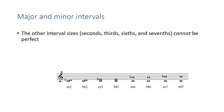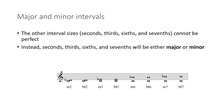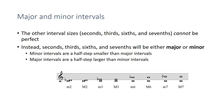The other interval sizes — seconds, thirds, sixths, and sevenths — can never be perfect. They have two states: they can be either major or minor. Minor intervals are a half step smaller than major intervals, and major intervals are a half step larger than minor intervals. So a half step is a minor second, two half steps is a major second, and we also have minor third, major third, minor sixth, major sixth, minor seventh, and major seventh.